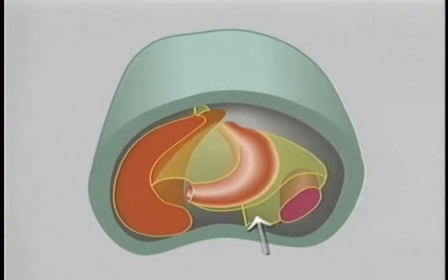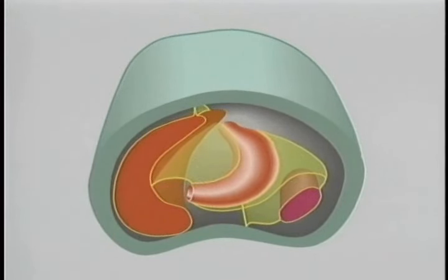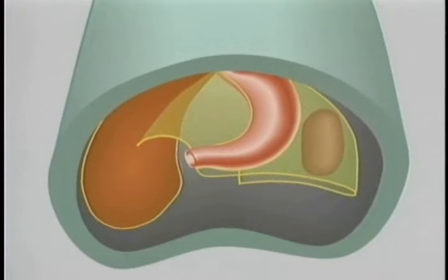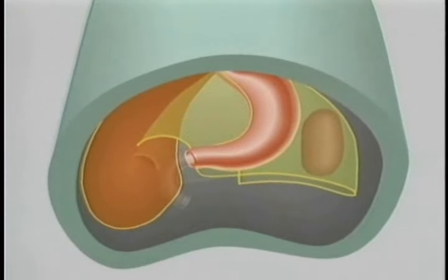Here's the space that will be the lesser sac. This is the lesser omentum. This part of the dorsal mesogastrium will grow downwards to become the greater omentum. We'll move to a slightly lower vantage point so we can add the duodenum to the picture. The foregut ends here, and so does the lesser omentum.